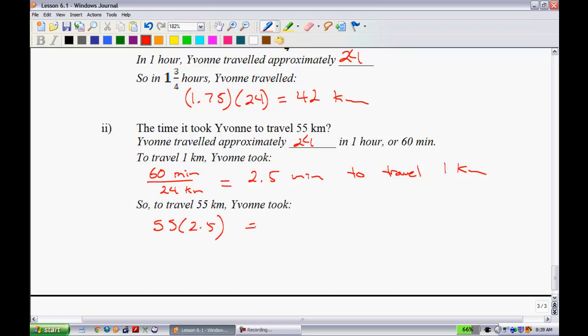When you do this, you'll just take 25 multiplied by 2, that's 110, and then take 55 and multiply by the 0.5, so that's half of 55. Add all that up, and you get 137.5 minutes.